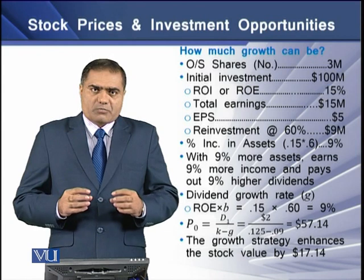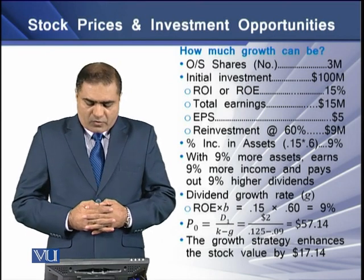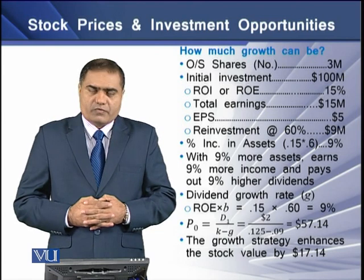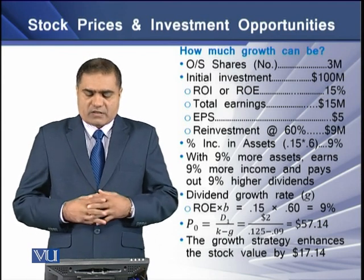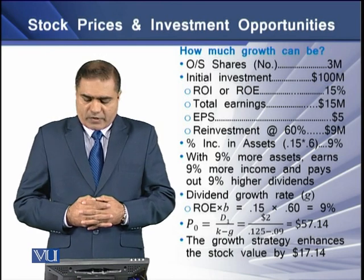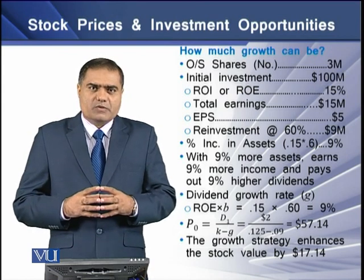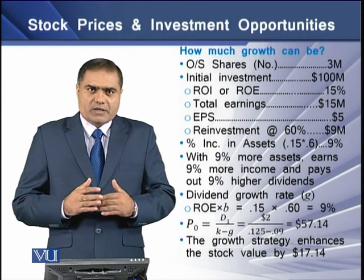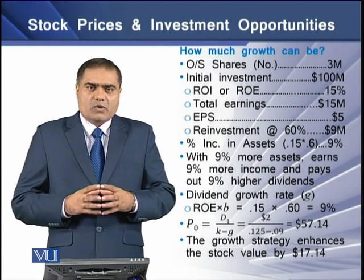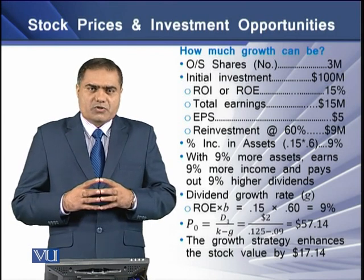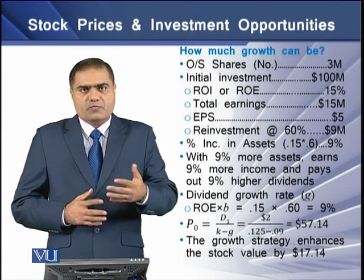We can now determine the stock price of this firm using the formula D1 over (K minus G). With D1 = $2, K = 12.5%, and G = 9%, the resulting stock price is $57.14. Comparing this to the no-growth strategy where the stock was $40 per share, under the growth strategy the value is $57.14 per share — an increase of $17.14 per share.